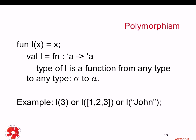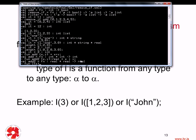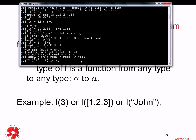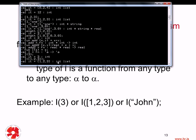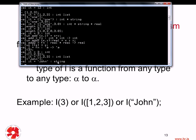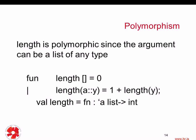We mentioned polymorphism and saw an example with the length function. Here is a simple identity function i of x, which equals x — it takes any type A and returns the same type back. If I do i of 3 I get 3, if I do i of [1,2,3] I get [1,2,3], and if I do i of "John" I get "John". This is an example of a polymorphic function because it can take any type as an argument. The length function is similarly polymorphic.